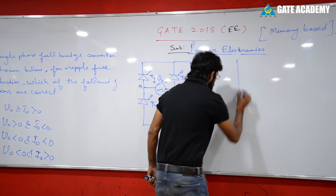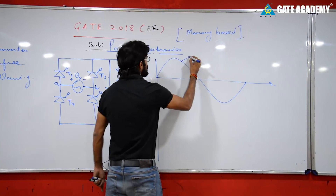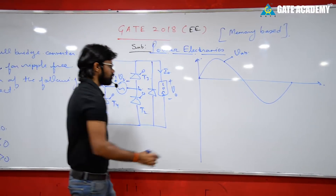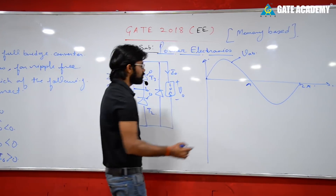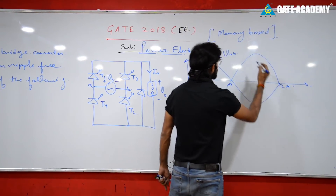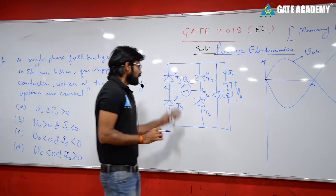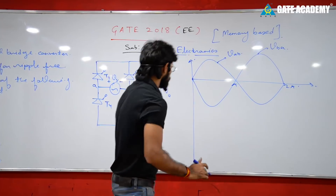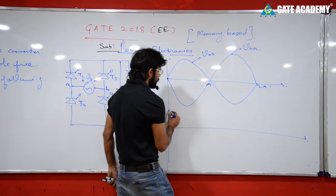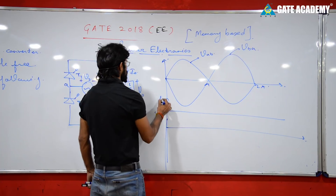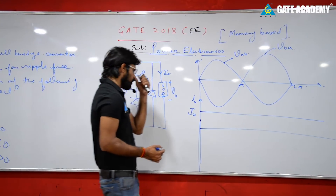Let me draw the box. The supply is Vs, and I can see the VAB voltage waveform — this goes from 0 to 2π. This is VAB. Now, if I fire at angle alpha, then I_not (load current) is always constant — that is the ripple-free conduction condition. I_not is constant and positive. This operation is called alpha power firing.